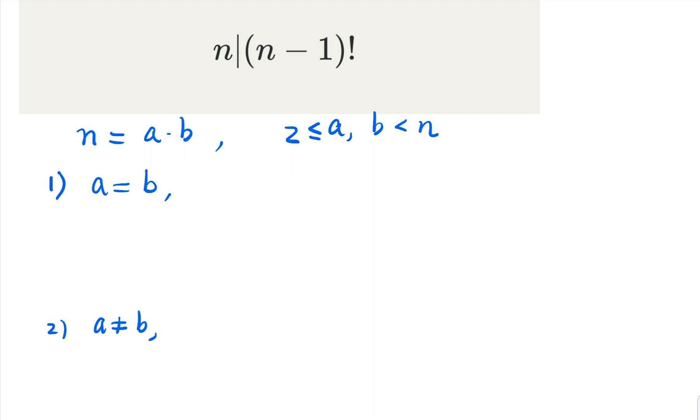In this case, a equals b, that is, n equals a squared. Since n is greater than 4, we claim that a is greater than 2. So what that means is that 2a is going to be smaller than a times a, that's a squared, that's n. So we have shown that both a and 2a are less than n.